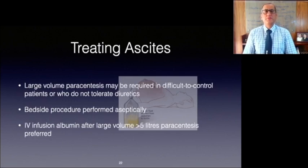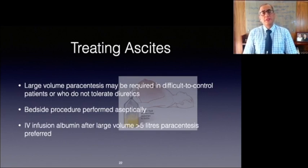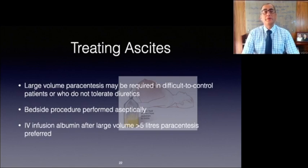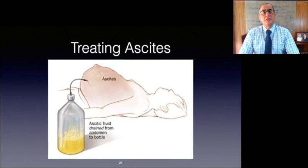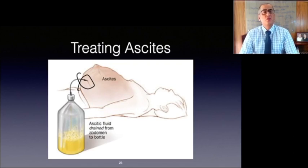Large volume paracentesis may still be required in patients with difficult-to-control ascites or in those who do not tolerate diuretic therapy. Abdominal paracentesis may be used to therapeutically remove ascites and is useful in relieving respiratory difficulties, acute oliguria, or pain. The paracentesis is performed at the bedside: after sterilization of the abdominal wall, a local anesthetic is administered, and a sterile needle is inserted into the left abdomen to drain the ascitic fluid. Infusion of intravenous albumin after large volume paracentesis — greater than 5 liters — is preferred.